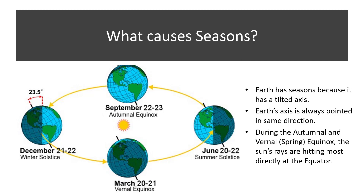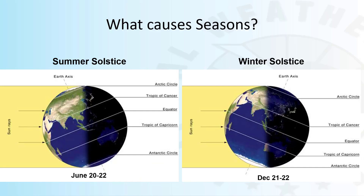During the autumnal, invernal, or spring equinox, the sun's rays are hitting most directly at the equator. During the summer solstice, the sun's rays are hitting the Tropic of Cancer in the Northern Hemisphere directly. This is summer in the Northern Hemisphere.